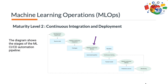Stage 3 is pipeline continuous delivery: you deploy the artifacts produced by the CI stage to the target environment. The output of this stage is a deployed pipeline with the new implementation of the model.